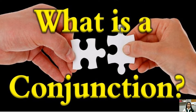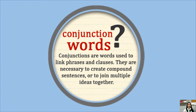Our lesson today is about conjunctions. I know you have a little bit of idea about this topic because we discussed some of its uses in our previous lesson. What is the meaning of conjunctions? Conjunctions are words used to link phrases and clauses. They are necessary to create a compound sentence or to join multiple ideas together. A conjunction is a joiner or a connector — a word that connects or conjoins parts of a sentence.